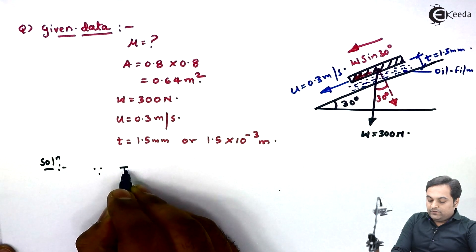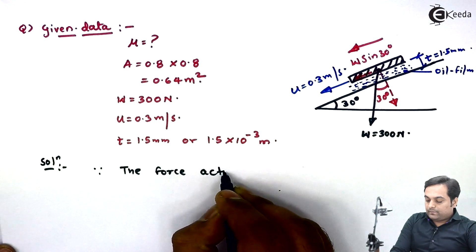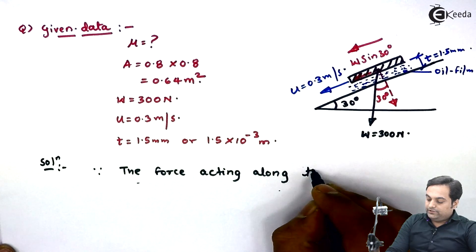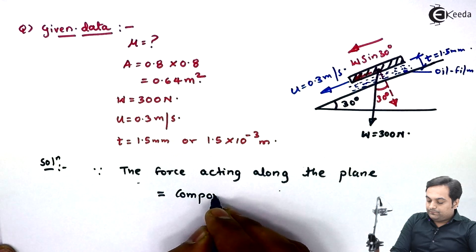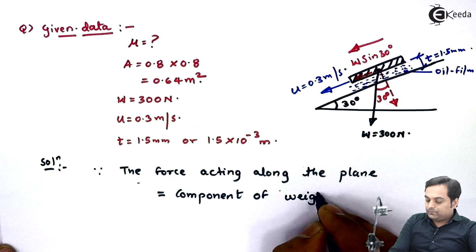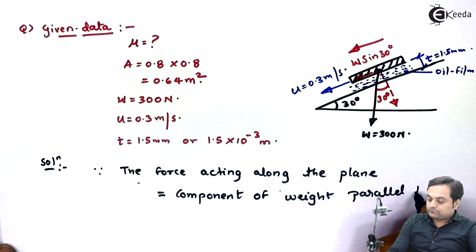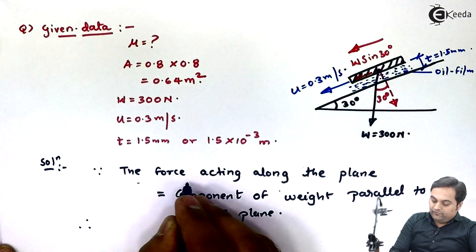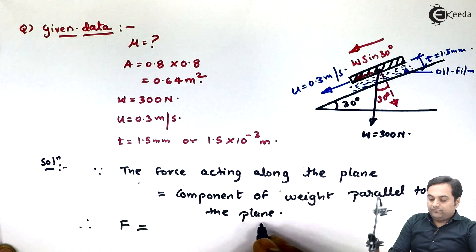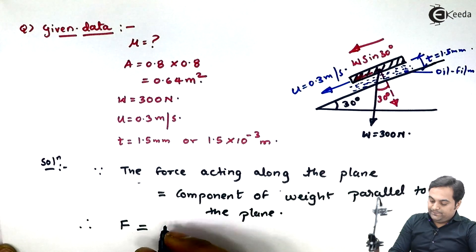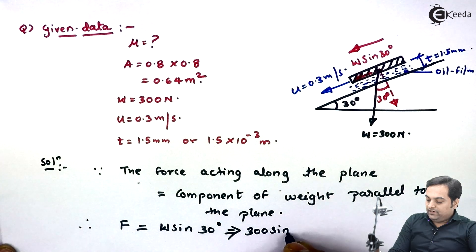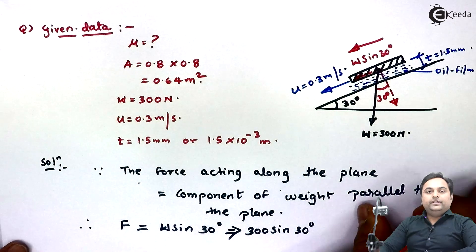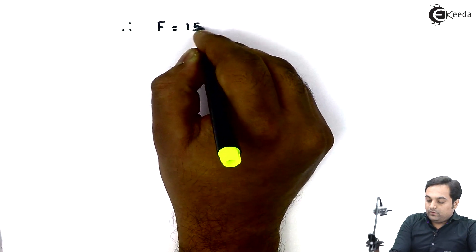Since the force acting along the plane is equal to the component of weight parallel to the plane, we have F = W sin 30°. Substituting: F = 300 × sin 30° = 300 × 0.5 = 150 Newton. Therefore F = 150 N.